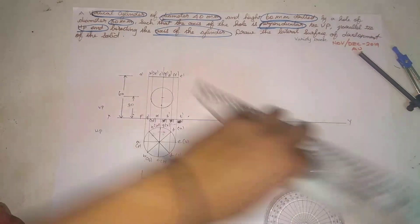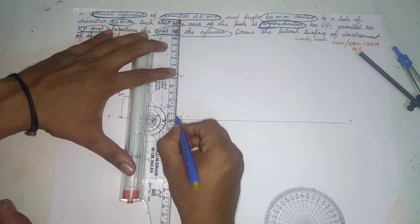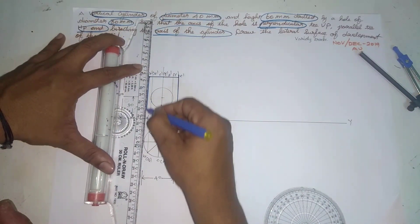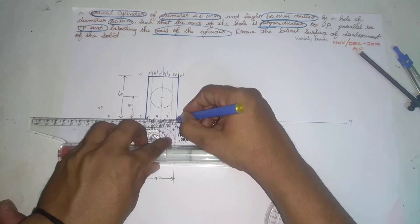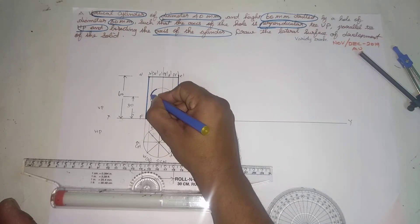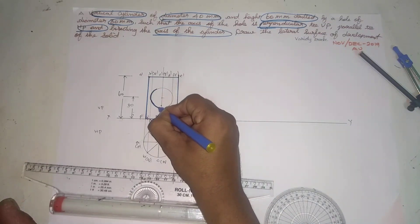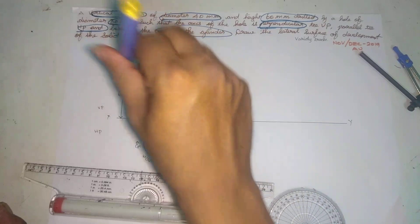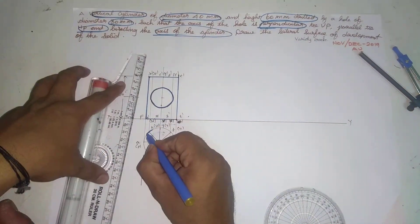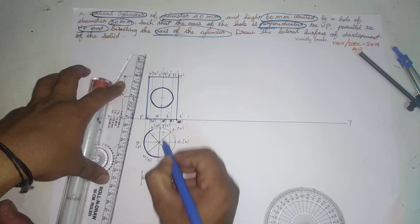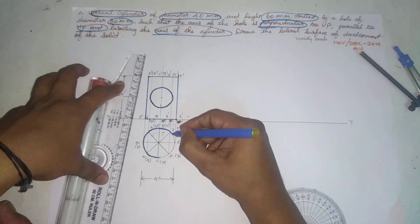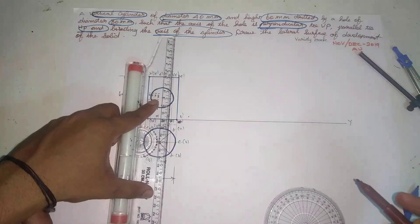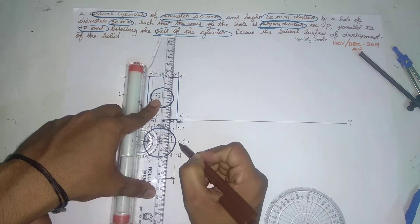The arrangement is in the direction of the VP. Some components are built in that direction. The cylinder components are in relation to the multiple components of the VP. There is a circle, and the hole is perpendicular to the VP.